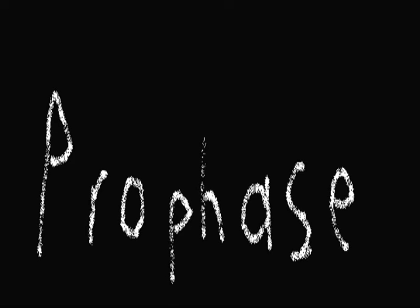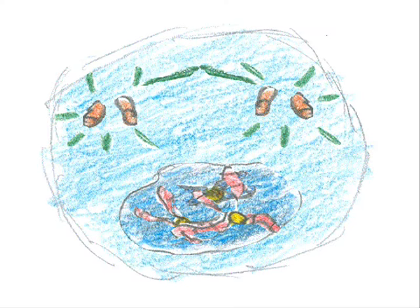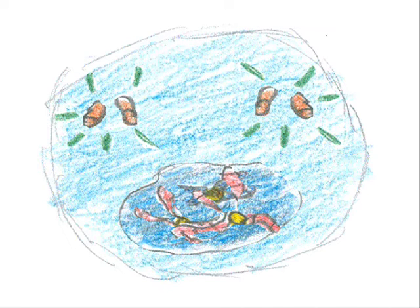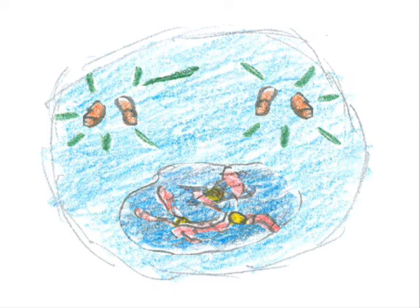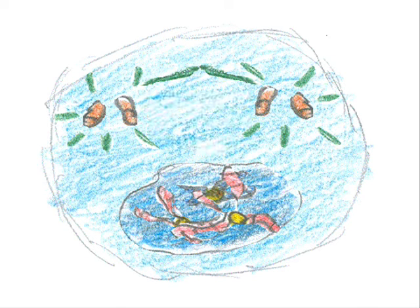During prophase, the chromatin in the nucleus condenses to form chromosomes, and structures called spindle fibers form bridges between the ends of the cell.